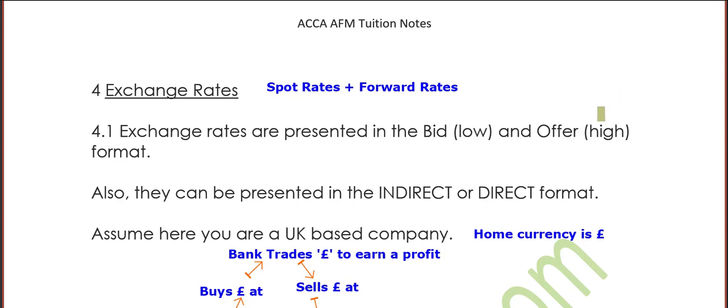Exchange rates will be presented within AFM in the format of what you call the bid-offer presentation — bid being the low rate, offer being the high rate. They can be presented in two formats depending on which currency is locked at the value of one, which we call the product currency, valued by the variable currency. This depends on whether you have the indirect or the direct presentation.